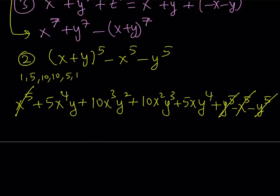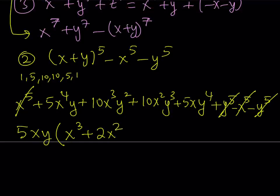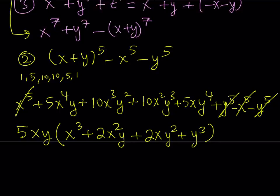The rest of the terms have a common factor of 5xy. So we take out 5xy and get: x cubed plus 2x squared y plus 2xy squared plus y cubed. But this expression can be factored further. x cubed plus y cubed can be factored as x plus y times x squared minus xy plus y squared, and the 2xy terms factor as 2xy times x plus y. So x plus y is a common factor throughout.